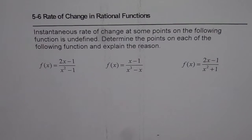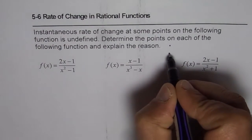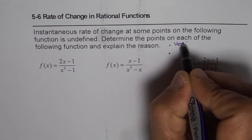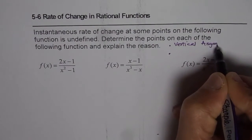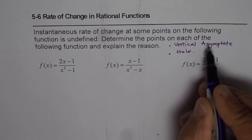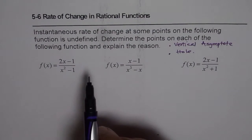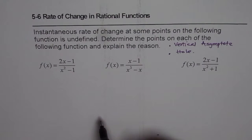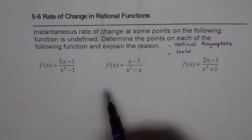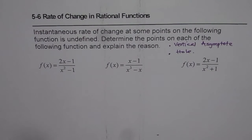For any rational function, there are two points where we cannot have instantaneous rate of change: a point where we have a vertical asymptote and the other point is where we will have a hole. The simple reason is that these points are not in the domain of that function. A rational function can have restrictions in the domain, and at those points which are not on the rational function's graph, we cannot draw a tangent line, so we cannot have instantaneous rate of change. We need to find from these equations the points where we could have a vertical asymptote or a hole.